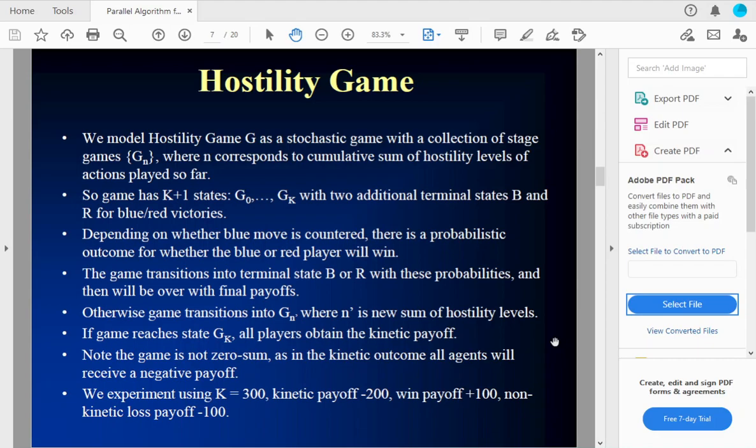And so if the hostilities, if the game is not over in a victory for a player, and they get to this hostility threshold K, the game's going to enter what's called kinetic mode and all players are going to get this kinetic payoff pi K. And so to talk a little bit about how the dynamics of this game actually work, we're going to model this as a stochastic game with a collection of stage games G sub N, where N is the cumulative sum of the hostility levels of the actions played so far. So initially, we're going to start in G0. There's going to be K plus one of these states GK with additional terminal states B and R for when, if a given player wins. Now, depending on whether a move is countered at a given state, there's going to be a certain probability for a win for blue or for red.